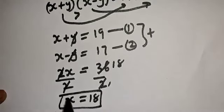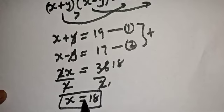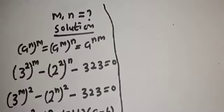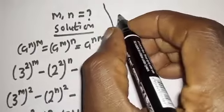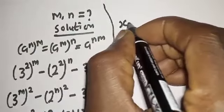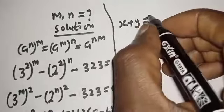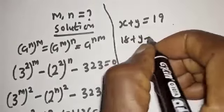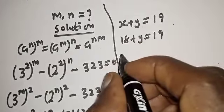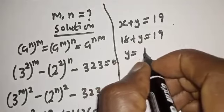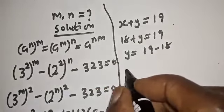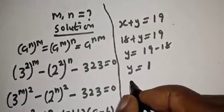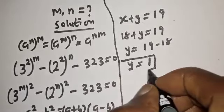Now we've gotten the value of s. Let's solve for y using equation 1. We have s plus y equals 19. Since s is 18, we get 18 plus y equals 19, so y equals 19 minus 18. Therefore, y is equal to 1.